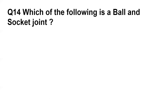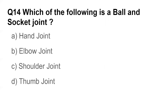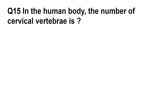Question number fourteen: Which of the following is a ball and socket joint? Question number fifteen: In the human body, the number of cervical vertebrae is — options are 5, 7, 8, and 12. The answer is 7.